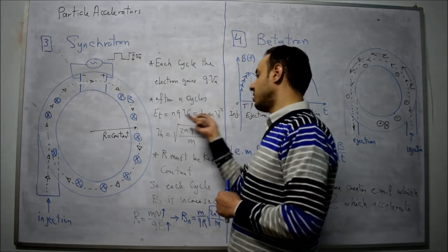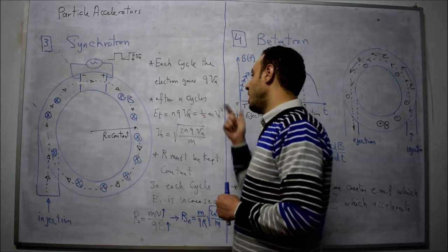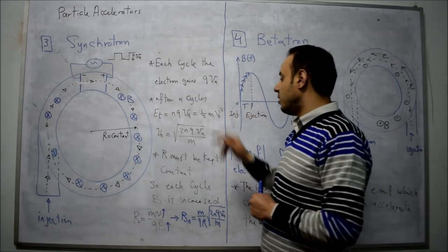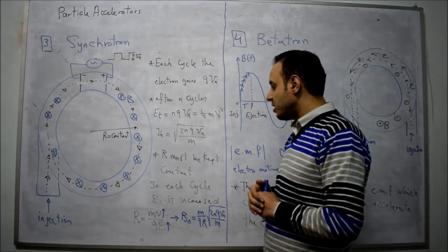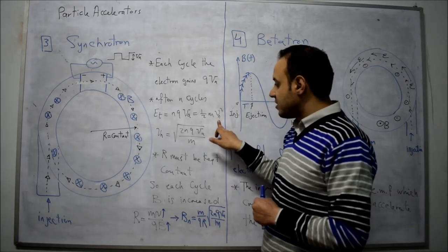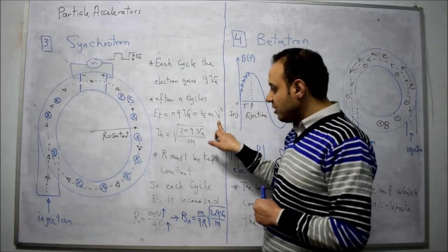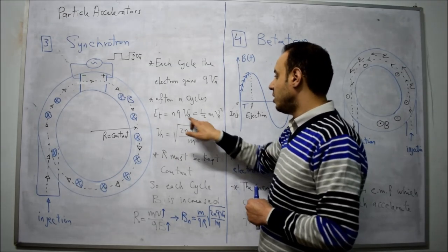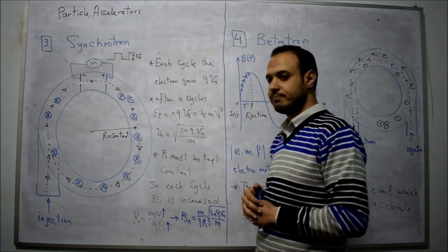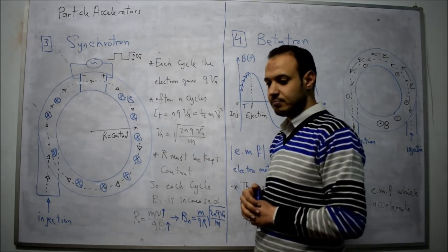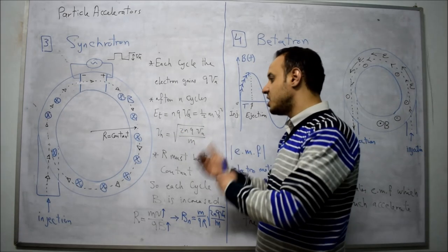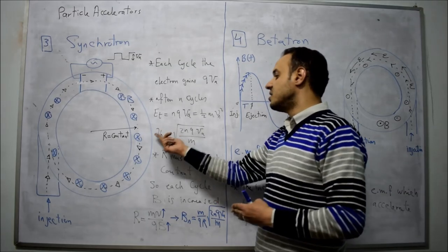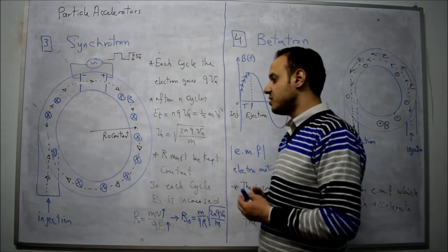Of course, this energy will be translated into kinetic energy: ½MV² = N×Q×Va. So the velocity at cycle number N is equal to the square root of 2N×Q×Va over M. As we increase the number of cycles, the velocity will be increased.